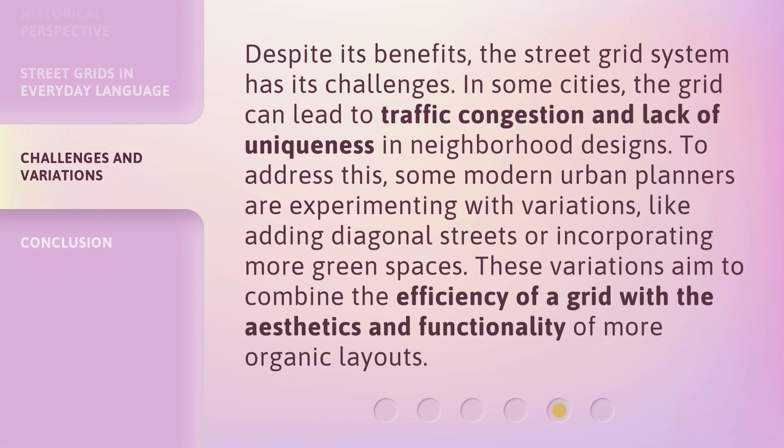Despite its benefits, the street grid system has its challenges. In some cities, the grid can lead to traffic congestion and lack of uniqueness in neighborhood designs. To address this, some modern urban planners are experimenting with variations, like adding diagonal streets or incorporating more green spaces. These variations aim to combine the efficiency of a grid with the aesthetics and functionality of more organic layouts.